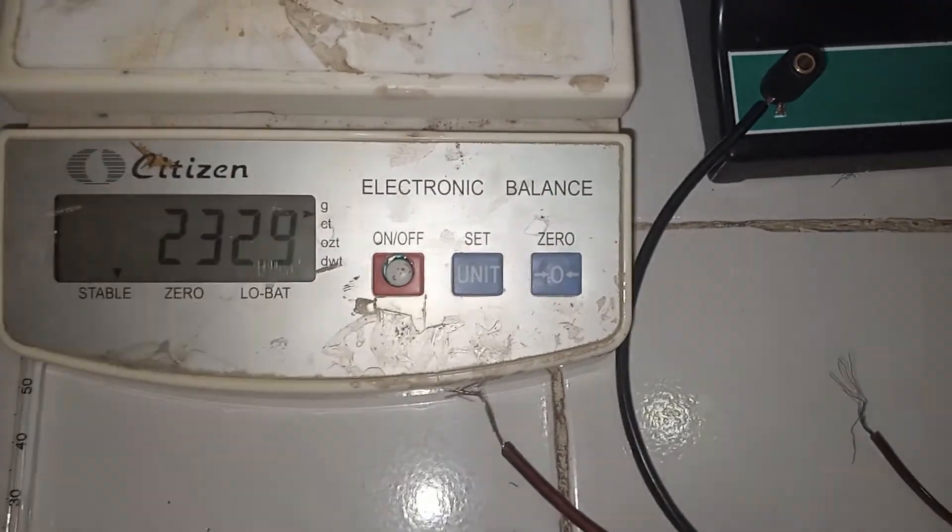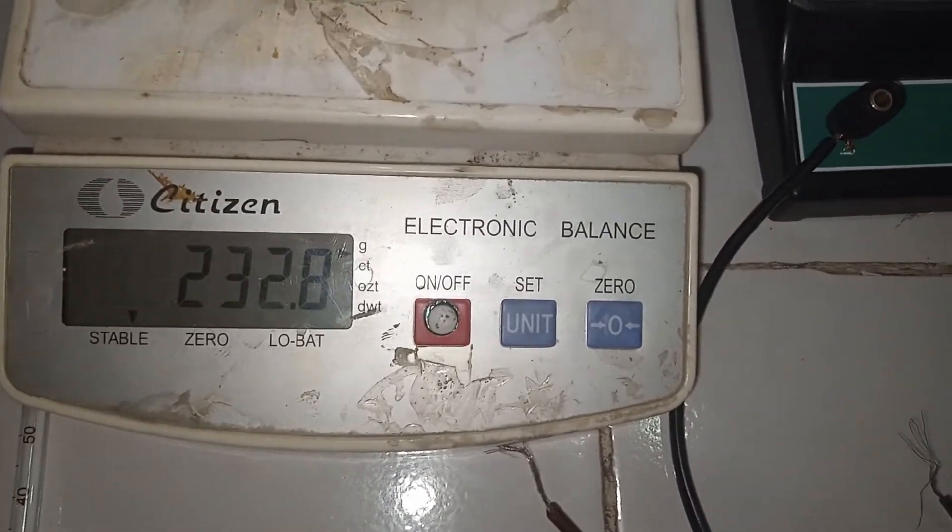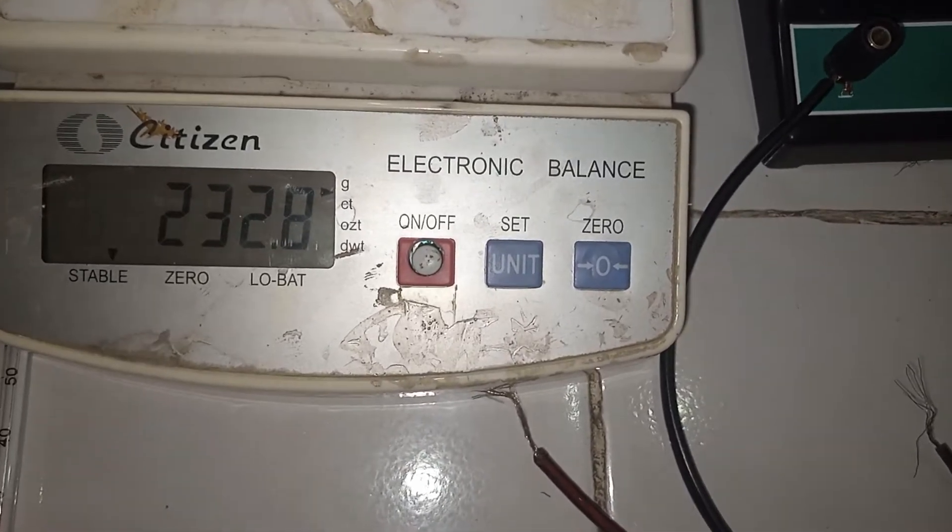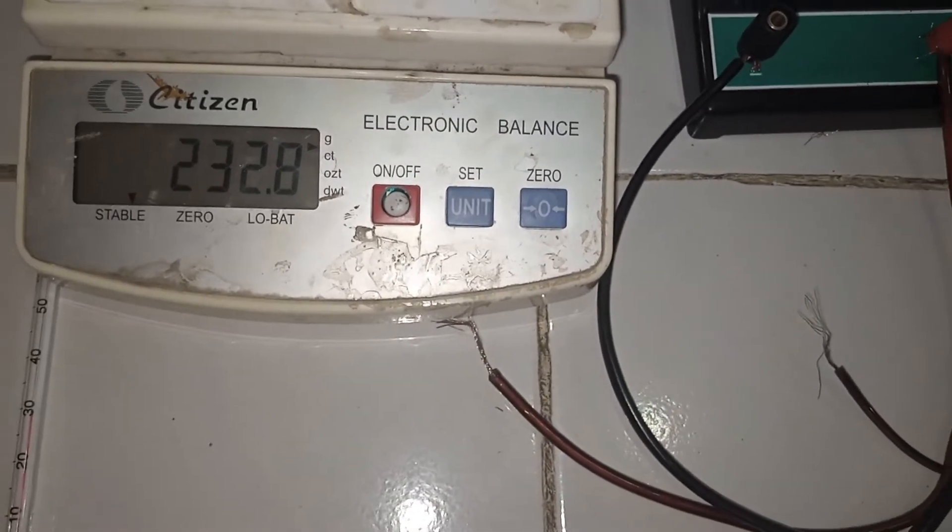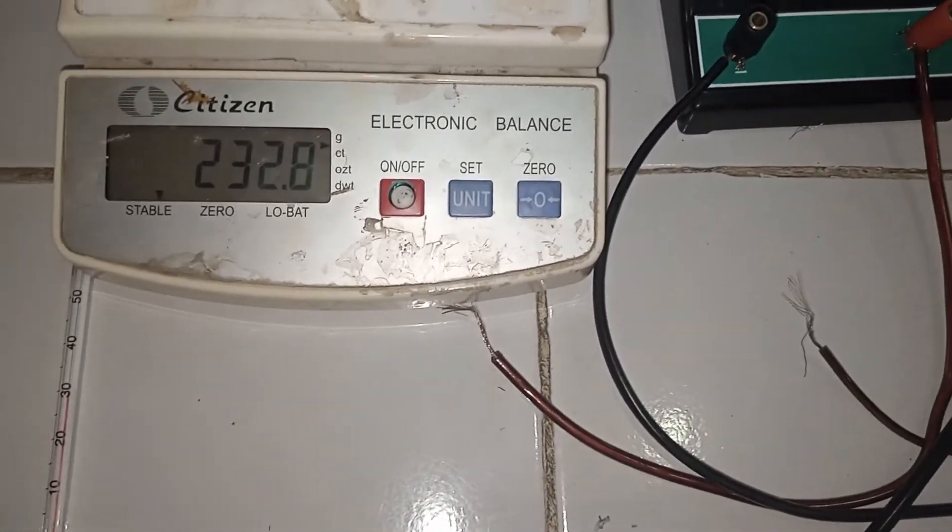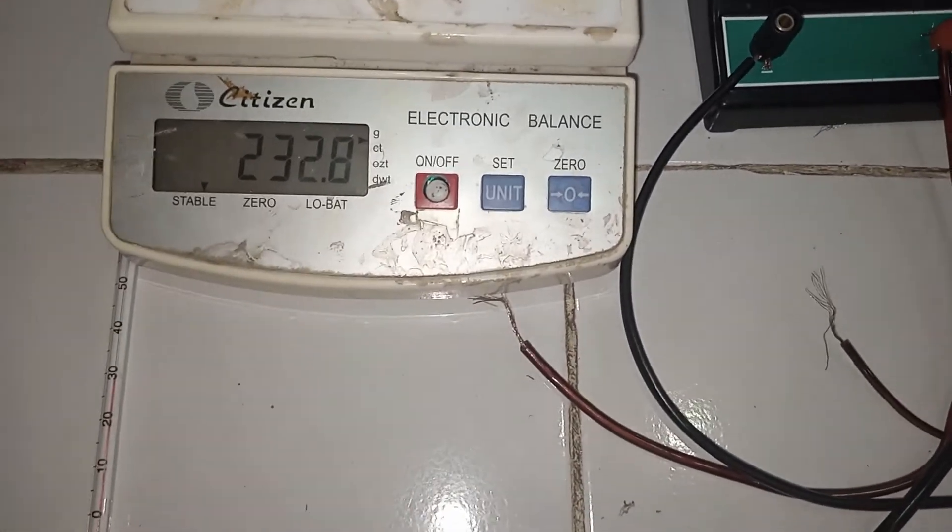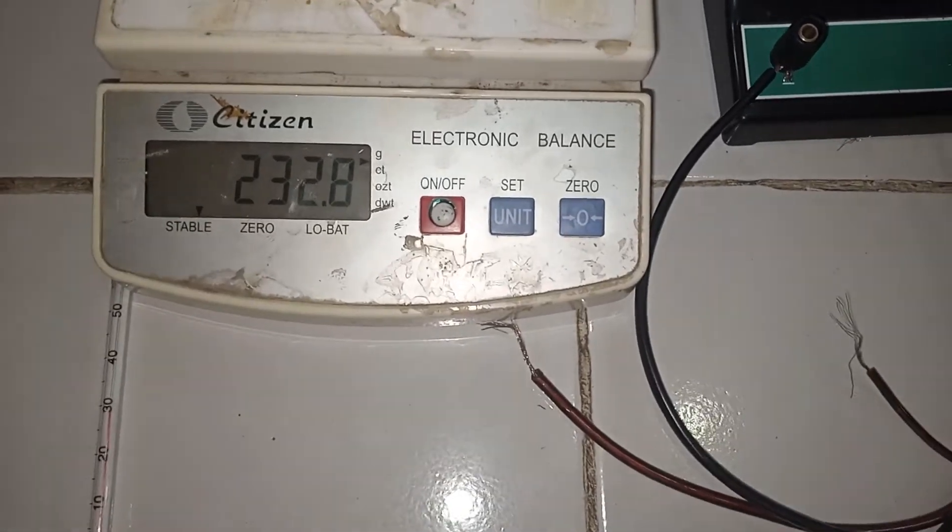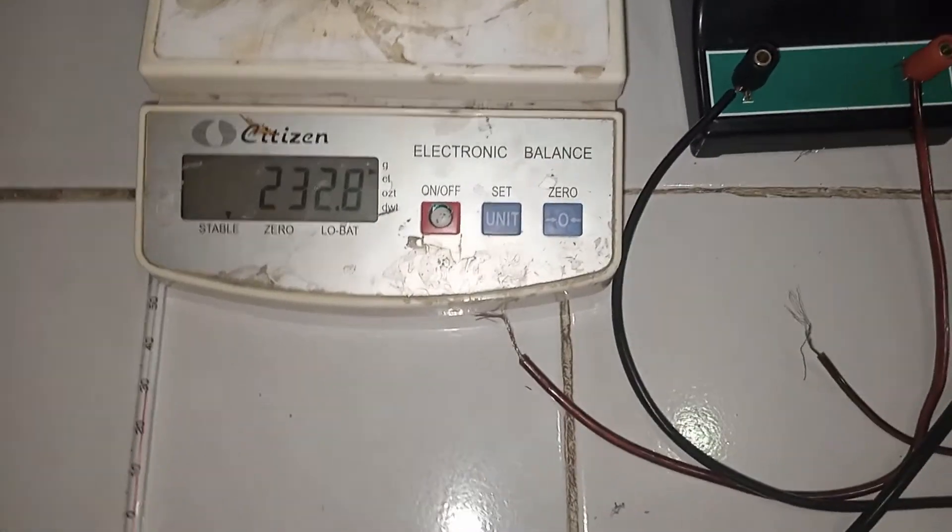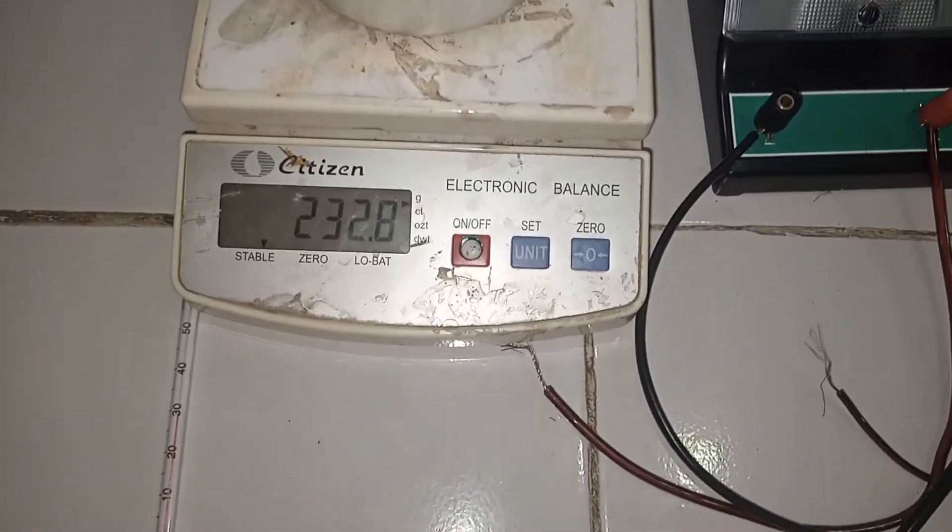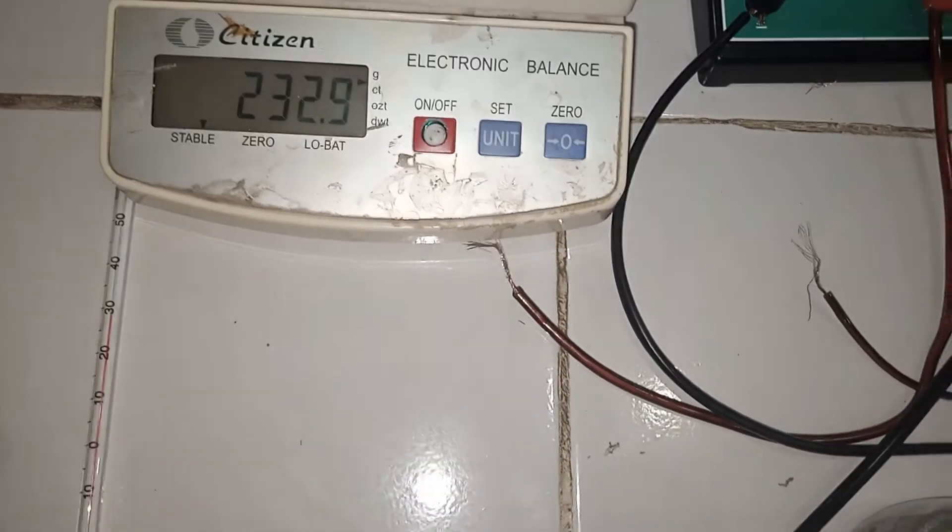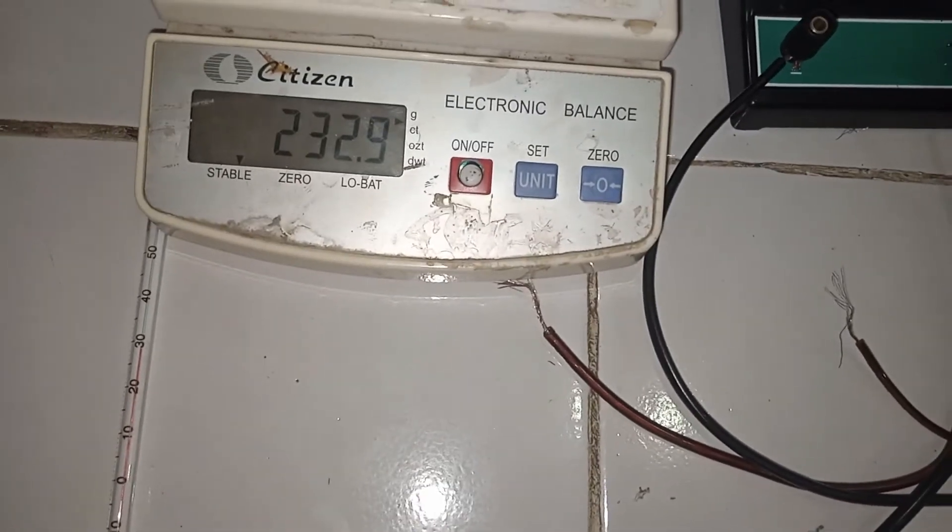So let us find using the chemical balance. The mass in grams is about 232.8 grams. This is the mass of the calorimeter when it is empty. Now we are going to record this and then pour water up to about two thirds of the container, and then we'll remeasure it again so that we can find the difference which gives us the mass of the water. So the mass of the calorimeter empty is 232.9 as you are seeing now.